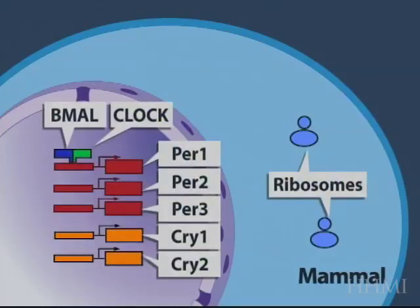To illustrate the role of the PERs and CRYs, what we have here are BMAL and CLOCK, which are the positive activators of actually a set of at least five genes. All three PER genes and both cryptochrome genes appear to be under the regulation of CLOCK based on genetic experiments.